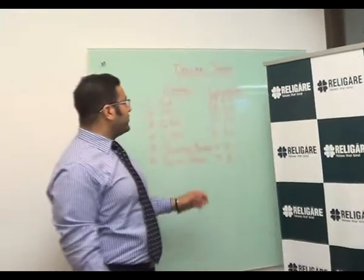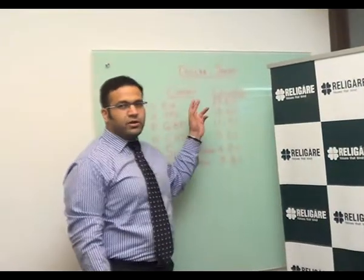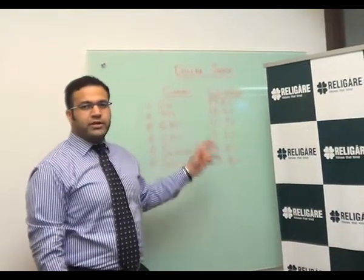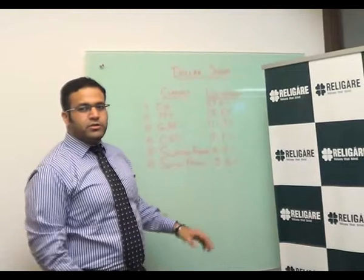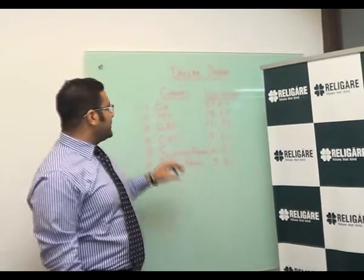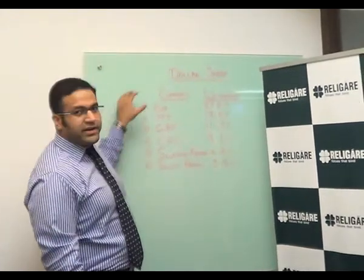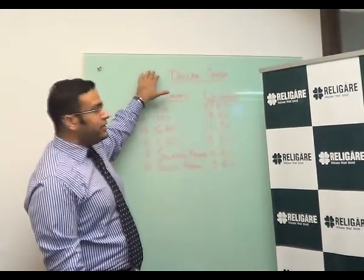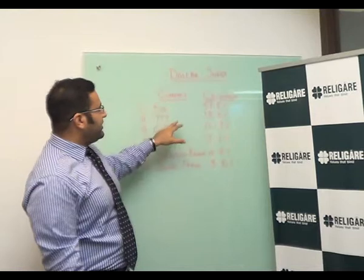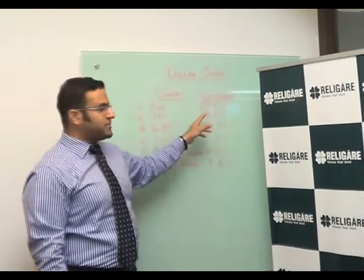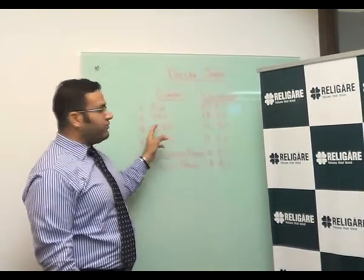Hi, today I am going to discuss what is Dollar Index and why is it important for commodity traders. Dollar Index is basically a set of six currencies which are weighed against the Dollar, with a maximum weightage of Euro having 57.6% weightage,